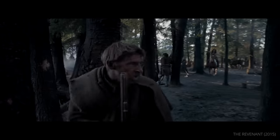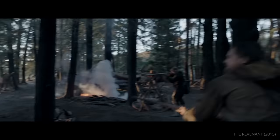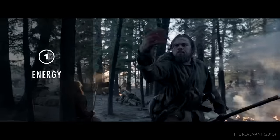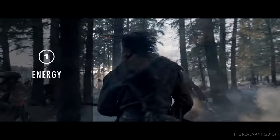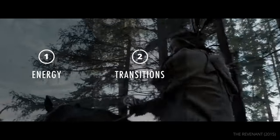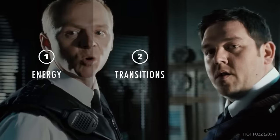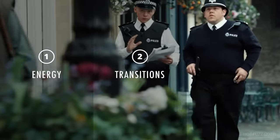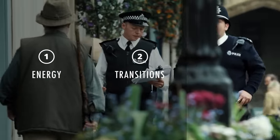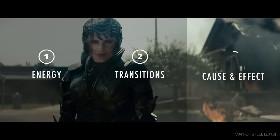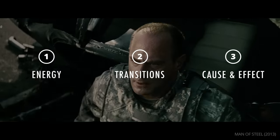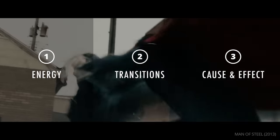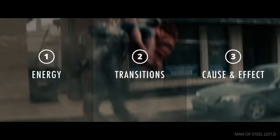Whip Pans can be successfully used for three reasons. Number one: energy — you can use Whip Pans to amplify the adrenaline of a scene or action. Number two: transitions — Whip Pans can jump through time and space within your story, and create a portal that can send the viewer anywhere the storyteller wishes. Number three: cause and effect — you can use a Whip Pan to show a chain of events in real time, showing the viewer how this action leads to that outcome.